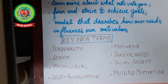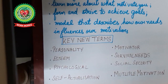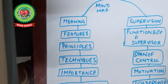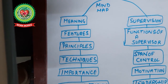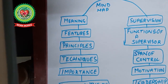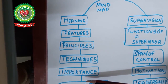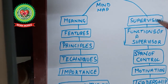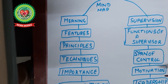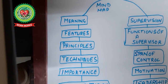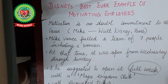Before proceeding with the topic, let us go through the mind map of what we are learning in this chapter. We have covered meaning, features, principles, techniques, and importance of directing; afterwards supervision, functions of a supervisor, span of control, types, motivation; and now we are going to cover Maslow's theory of motivation.